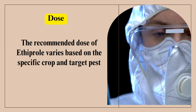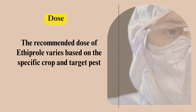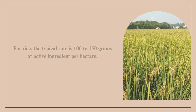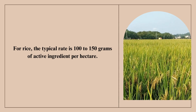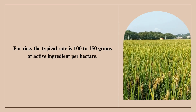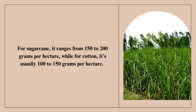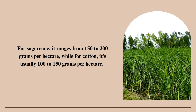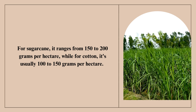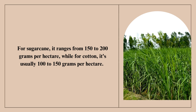Dose. The recommended dose of ethiprol varies based on the specific crop and target pest. For rice, the typical rate is 100 to 150 grams of active ingredient per hectare. For sugar cane, it ranges from 150 to 200 grams per hectare, while for cotton, it's usually 100 to 150 grams per hectare.